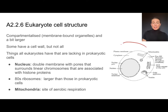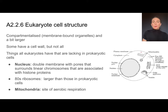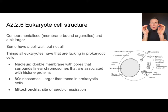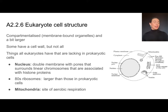In this diagram of a eukaryotic cell, it's much easier to see what we mean by the term compartmentalized. Compartmentalized means we have membrane-bound organelles that are separated from the rest of the cell environment. In their tiny compartment, they do a specialized job. Some eukaryotic cells, like plants or fungi, have a cell wall, but not all of them — unlike prokaryotes, which all have a cell wall.